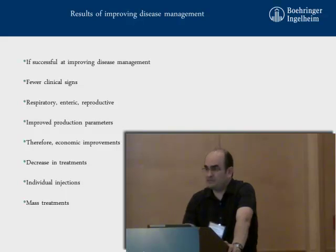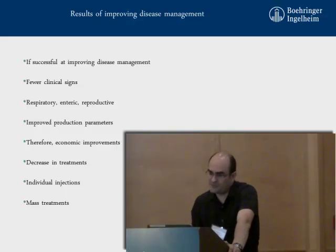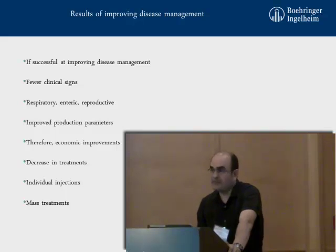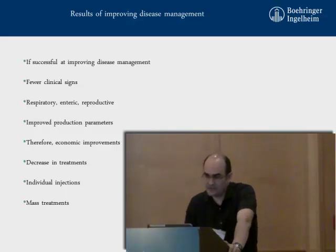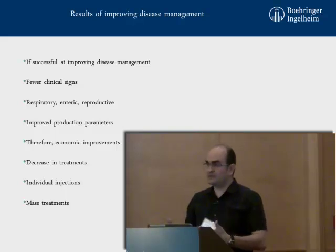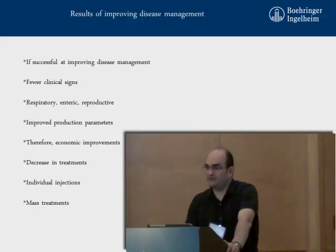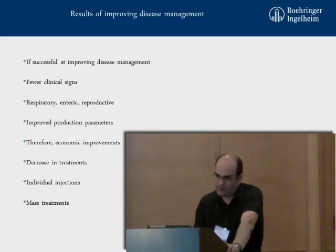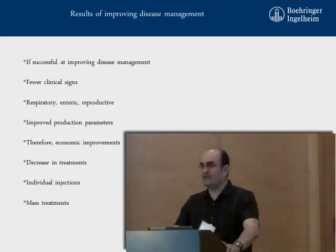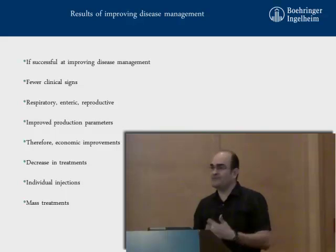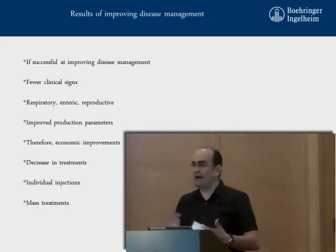A result of improved disease management: what we are looking for is a successful disease management outcome. We can expect fewer clinical signs — respiratory and reproductive, all of them — trying to reduce all these clinical manifestations. We also look for improved production parameters and economic improvements, as well as decreasing individual injections or mass treatments. That is our job when dealing with clinical problems or designing disease management protocols.